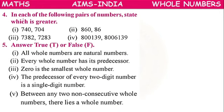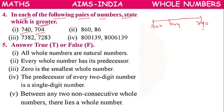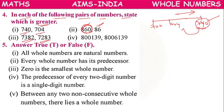In each of the following pairs, state which is greater. For 740 and 704: on the number line, 704 comes first then 740, so 740 is greater. For 860 and 886: 886 is greater. For 7382 and 7283: both have 7000, but 300 is greater than 200, so 7382 is the greater number.